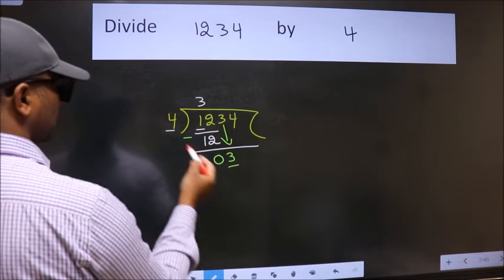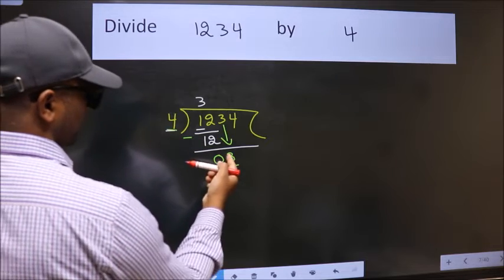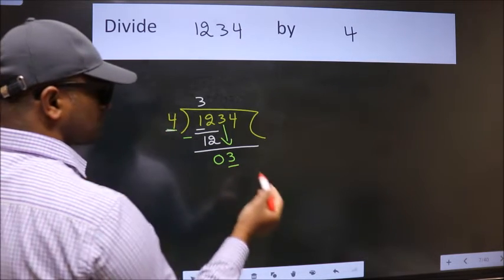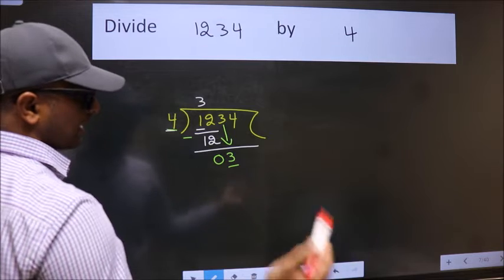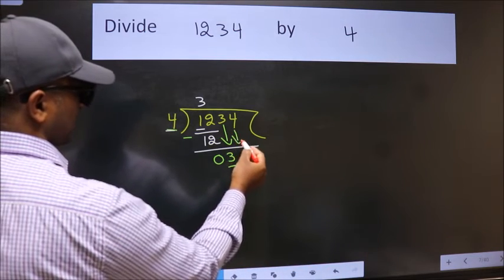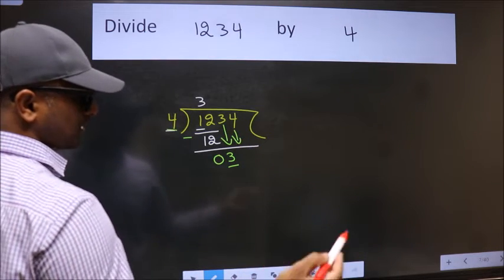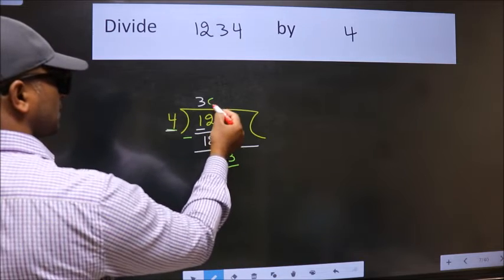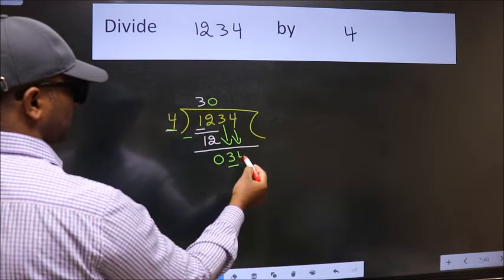Now here we have 3, here 4. 3 is smaller than 4, so we should bring down the second number. And the rule to bring down the second number is: put 0 here. Then only we can bring this number down.